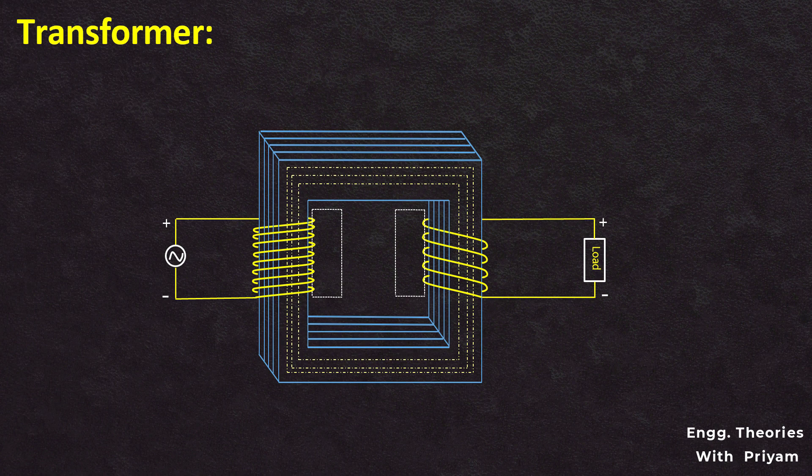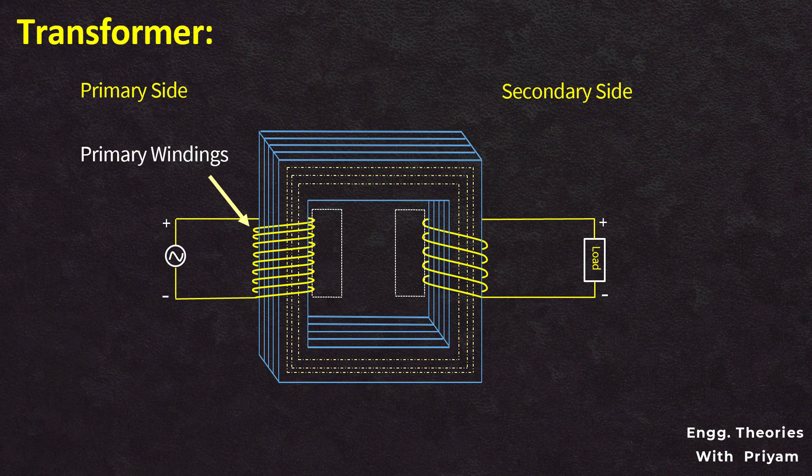We know that a transformer has two sides of section, primary side and the secondary side. The primary side of a transformer includes a primary winding, which is also referred as a primary coil and is comprised of N1 number of turns.